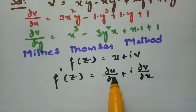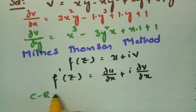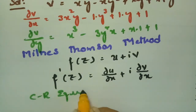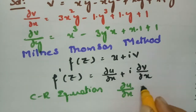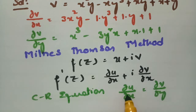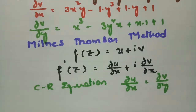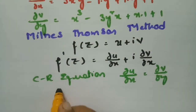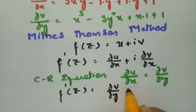Now I have the imaginary part v here, so I will transform the real part u in terms of the imaginary part. For that I am going to use the Cauchy-Riemann equations. According to the CR equations, ∂u/∂x equals ∂v/∂y. So in place of ∂u/∂x I write ∂v/∂y, and f′(z) becomes ∂v/∂y plus i times ∂v/∂x.